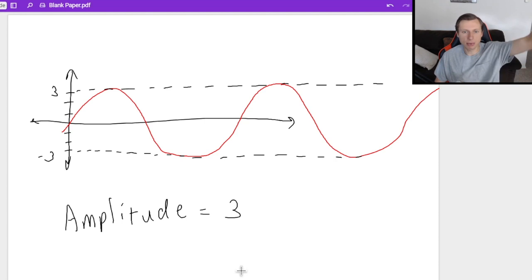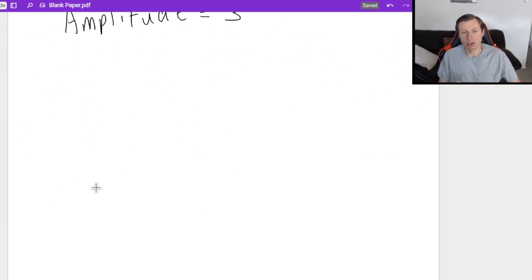Because you go three up from the middle line, and you go three down from the middle line, and the middle line is obviously at zero. So that's one way you can do it. Here's another way you can find amplitude.